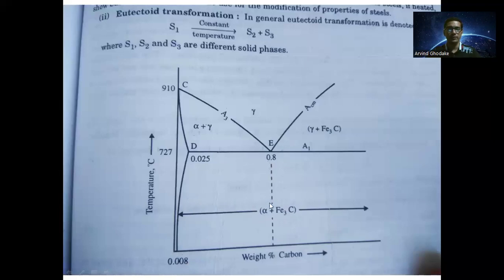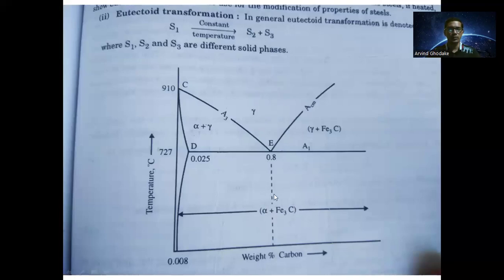If the carbon percent is less than 0.8 percent (starting from 0.008 percent), this type of steel is called hypo-eutectoid steel. From 0.8 to 2 percent carbon, the steel is called hyper-eutectoid steel. In this way, the eutectoid transformation occurs where one solid gets converted into two solids, S2 and S3.